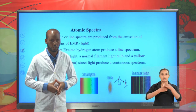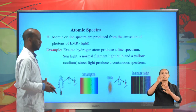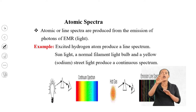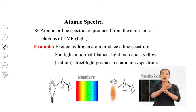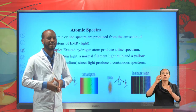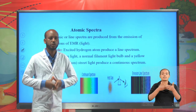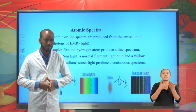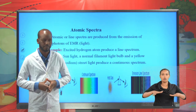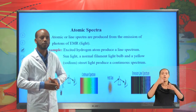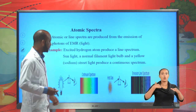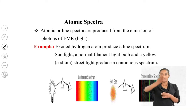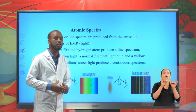Atomic spectrum. Atomic or line spectra are produced from the emission of photons of electromagnetic radiation or light. If an atom is vaporized thermally or electrically excited, then it emits light with a discrete frequency. If this light is allowed to pass through a prism, we observe a line spectrum rather than a continuous spectrum.